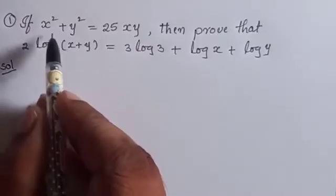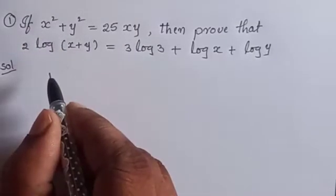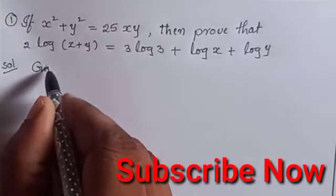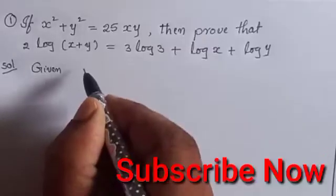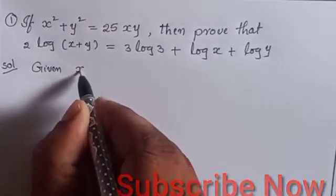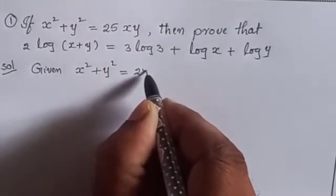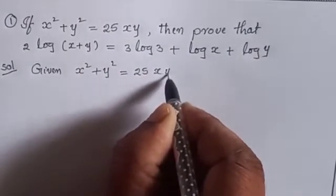What is given here? x square plus y square is equal to 25xy. Given x square plus y square is equal to 25xy.